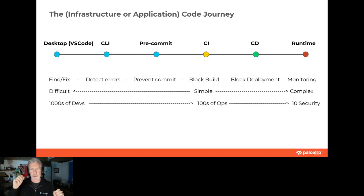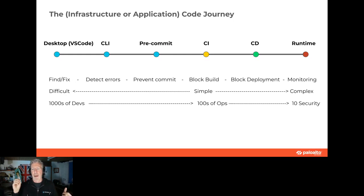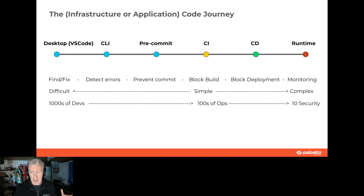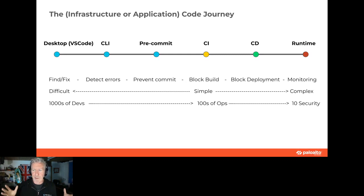It progresses through the command line, then into CI — and this is why security is kind of safe in CI. In CI we have the option to add all sorts of wonderful things. Then it goes to CD where something like Flux or Argo manages deployment, and it's off to runtime. Runtime is the scary part — the roughly 10 security people for every 1,000 developers are monitoring and hoping they don't detect an anomaly.